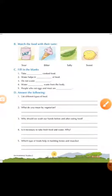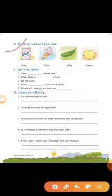Then, part B is, you have to match the food with their taste. Salt is a salty taste, ice cream is a sweet taste, bitter gourd is a bitter taste, and lime is a sour taste. So this is your matching.